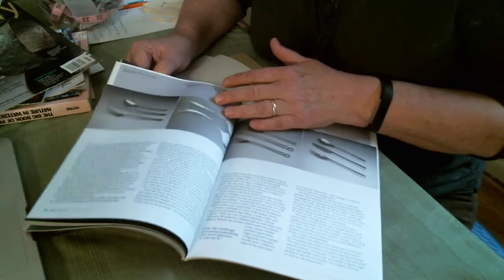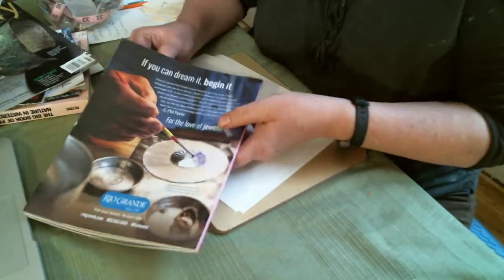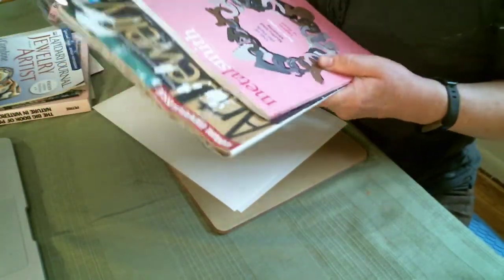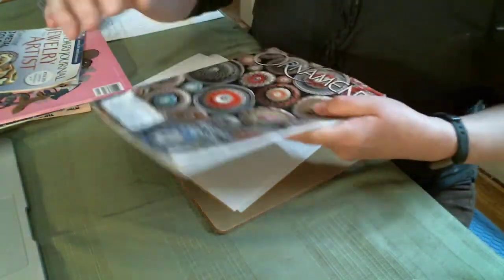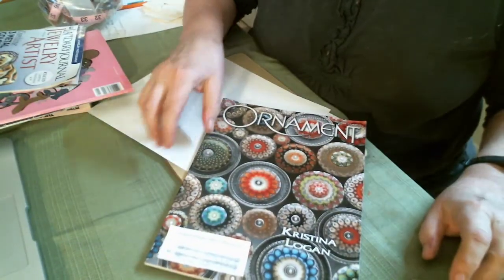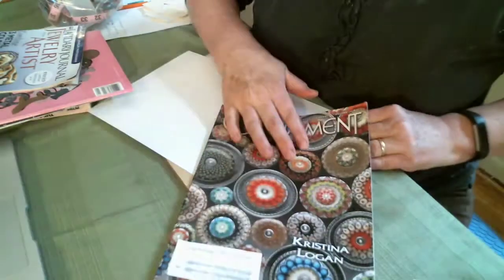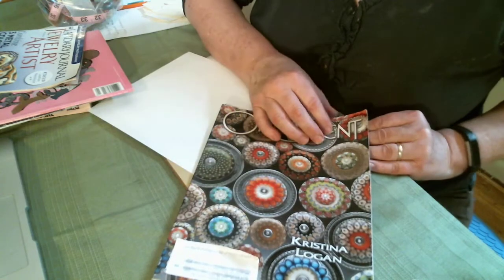Because indeed, cookie cutter jewelry just looks like a cookie cutter, right? It doesn't have that artistic statement that we are looking for. So here, again, just really beautiful symmetry here based on circle designs.